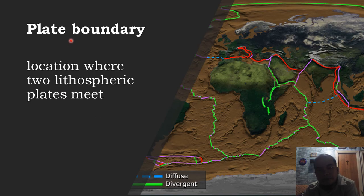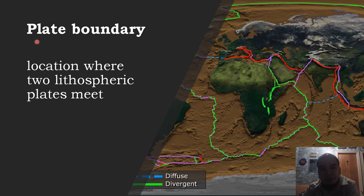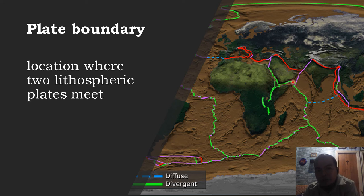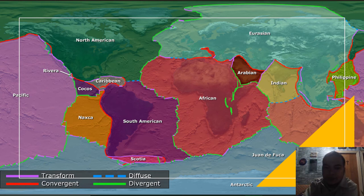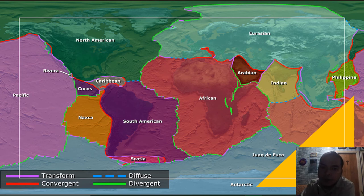Finally, here is 'boundary,' which we mentioned at the beginning of the presentation. A plate boundary is the location where two lithospheric plates meet. In this image, boundaries are shown as colored lines, where different colors correspond to different types of plate boundaries across the tectonic plates of the earth.